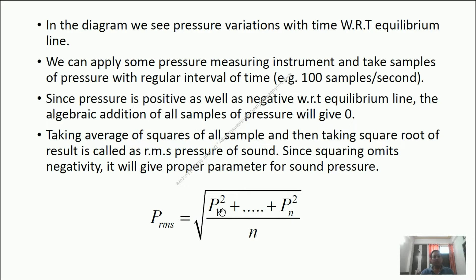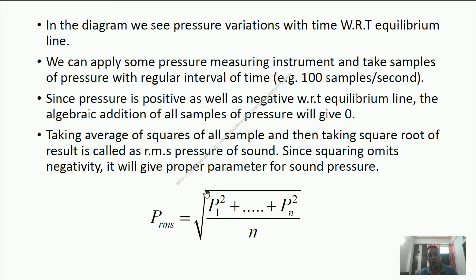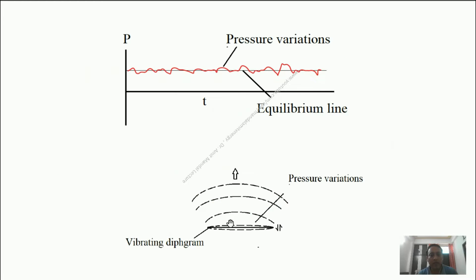So we cannot find the average pressure developed on this diaphragm. Another way to find the average is to take the squares of all those samples — the pressures we are measuring. Suppose P1 is the first pressure sample, P2 is the second. Take the squares and average of those squares. Since squaring always makes a negative number positive, we will get a positive answer. But the unit of pressure is Newton per meter square, and the squared unit would be Newton squared per meter to the power 4. So if we take the root of this average, we get the correct unit — Newton per meter square. That is called the root mean square pressure on this diaphragm. This will give some number other than zero, so we get some average pressure called the root mean square pressure on this vibrating diaphragm.